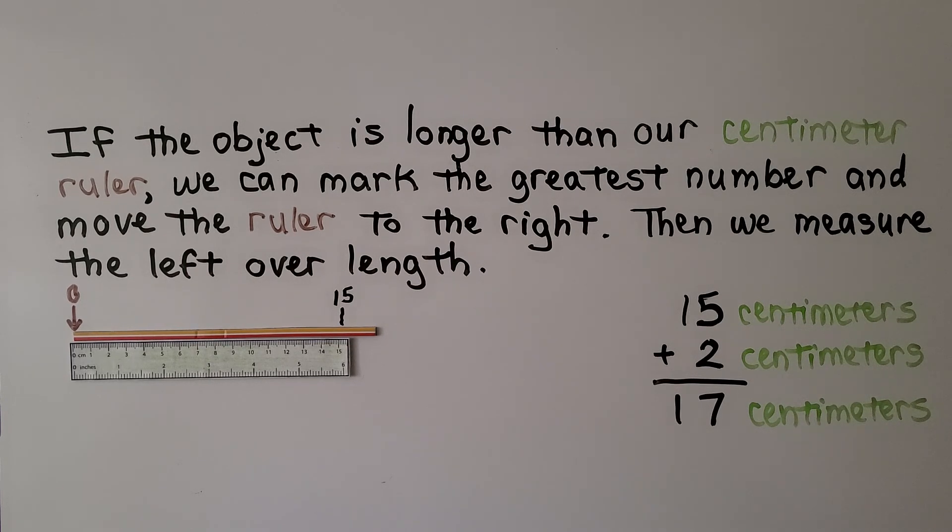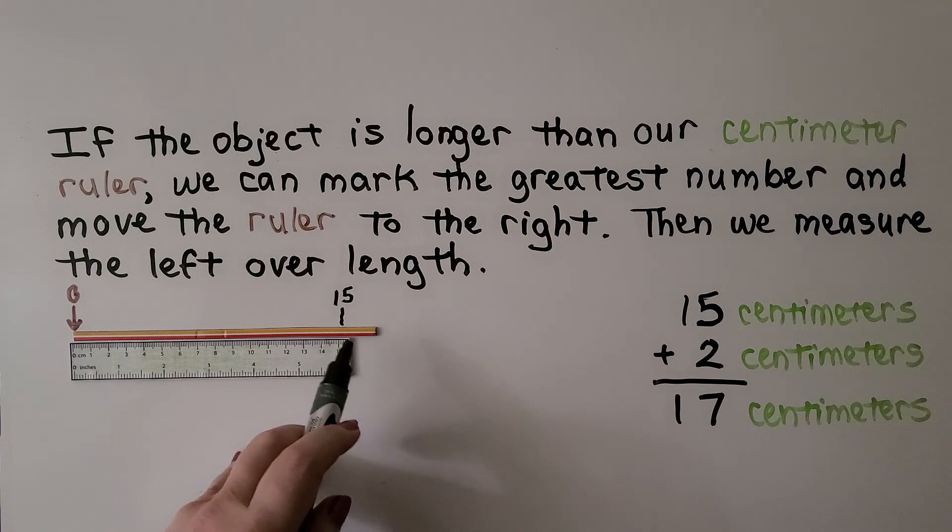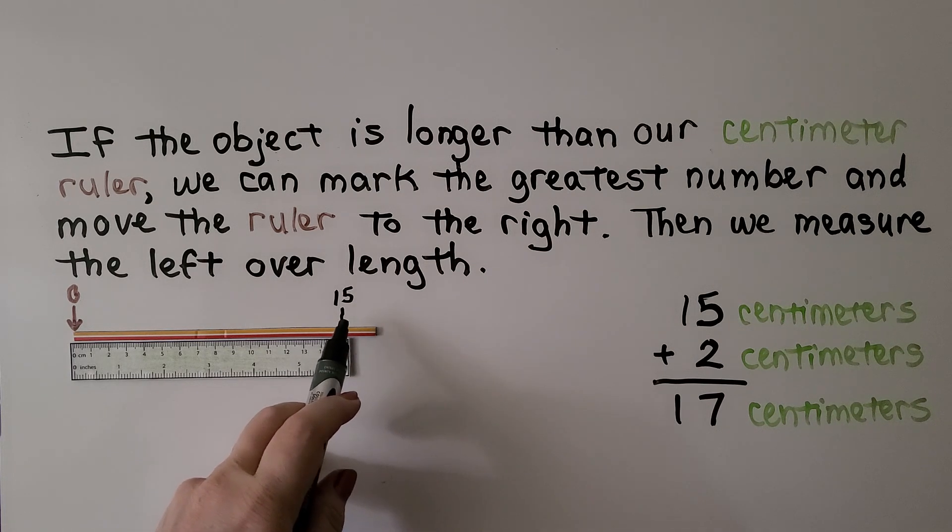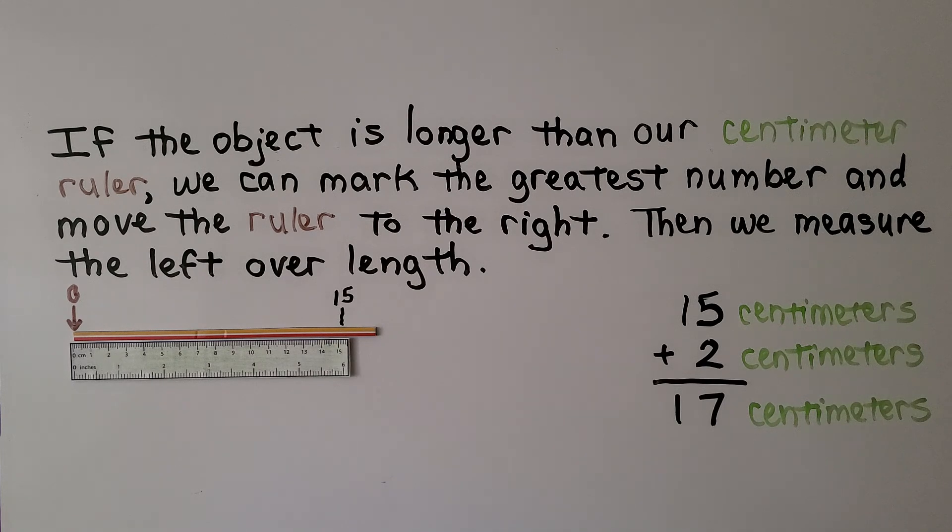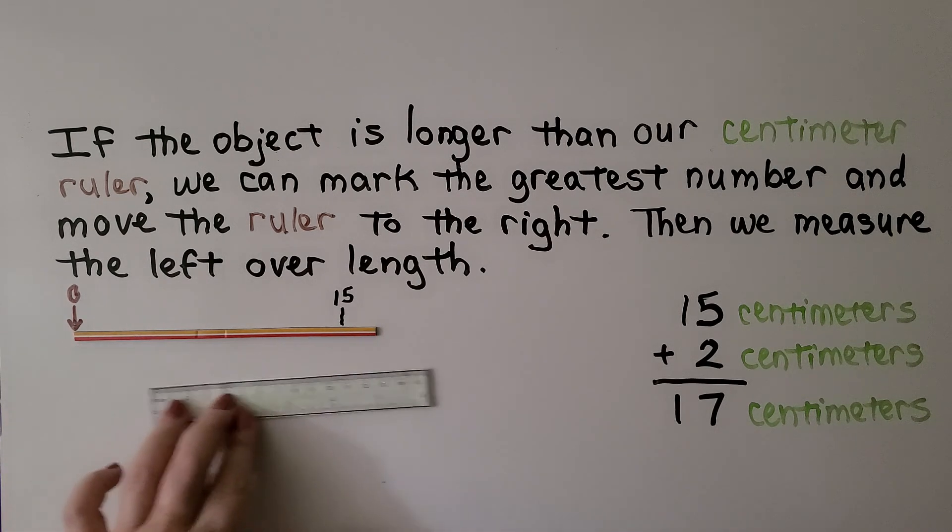If the object is longer than our centimeter ruler, we can mark the greatest number. So here is 15 centimeters, so we put a little mark there that that's 15.